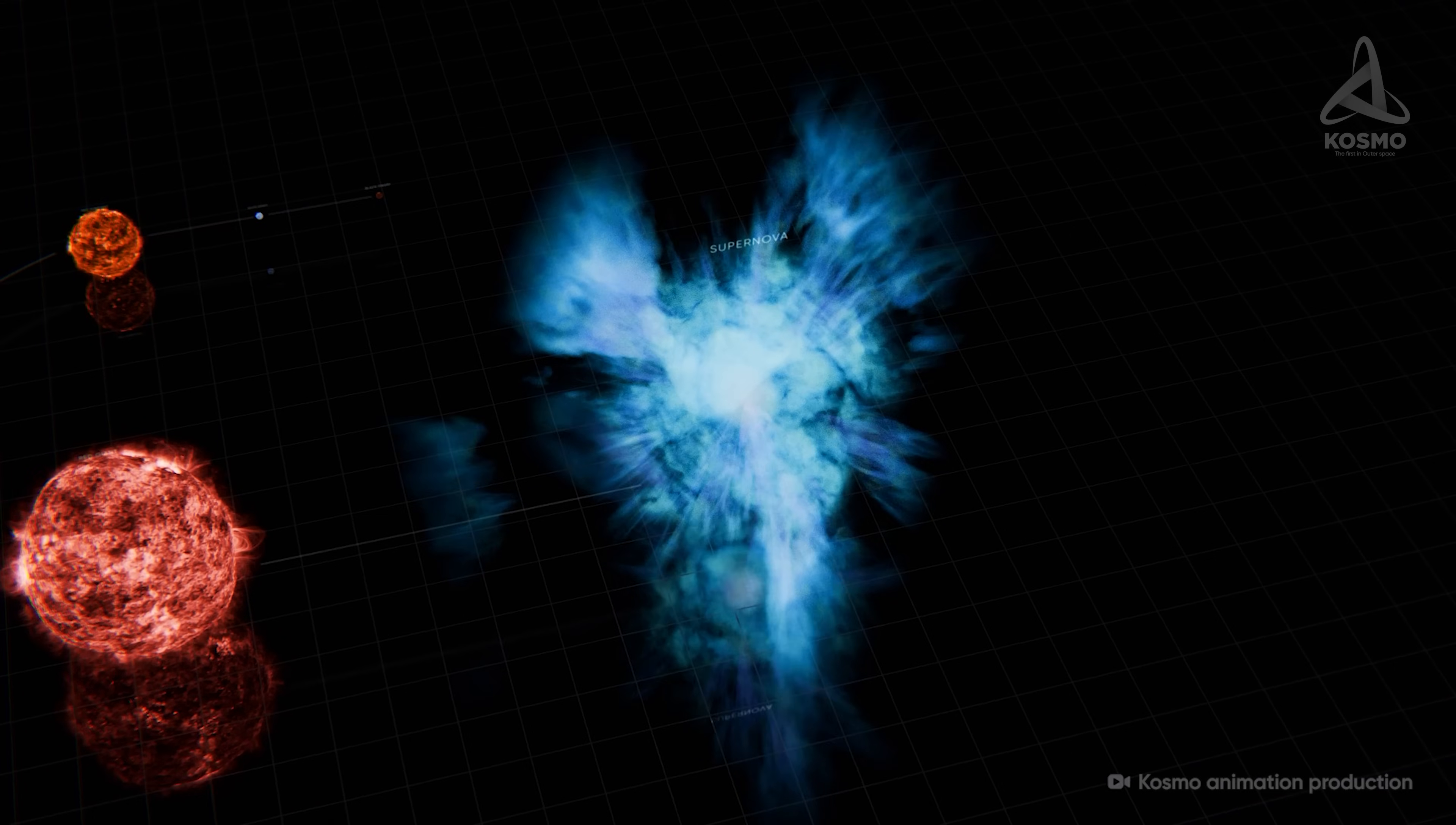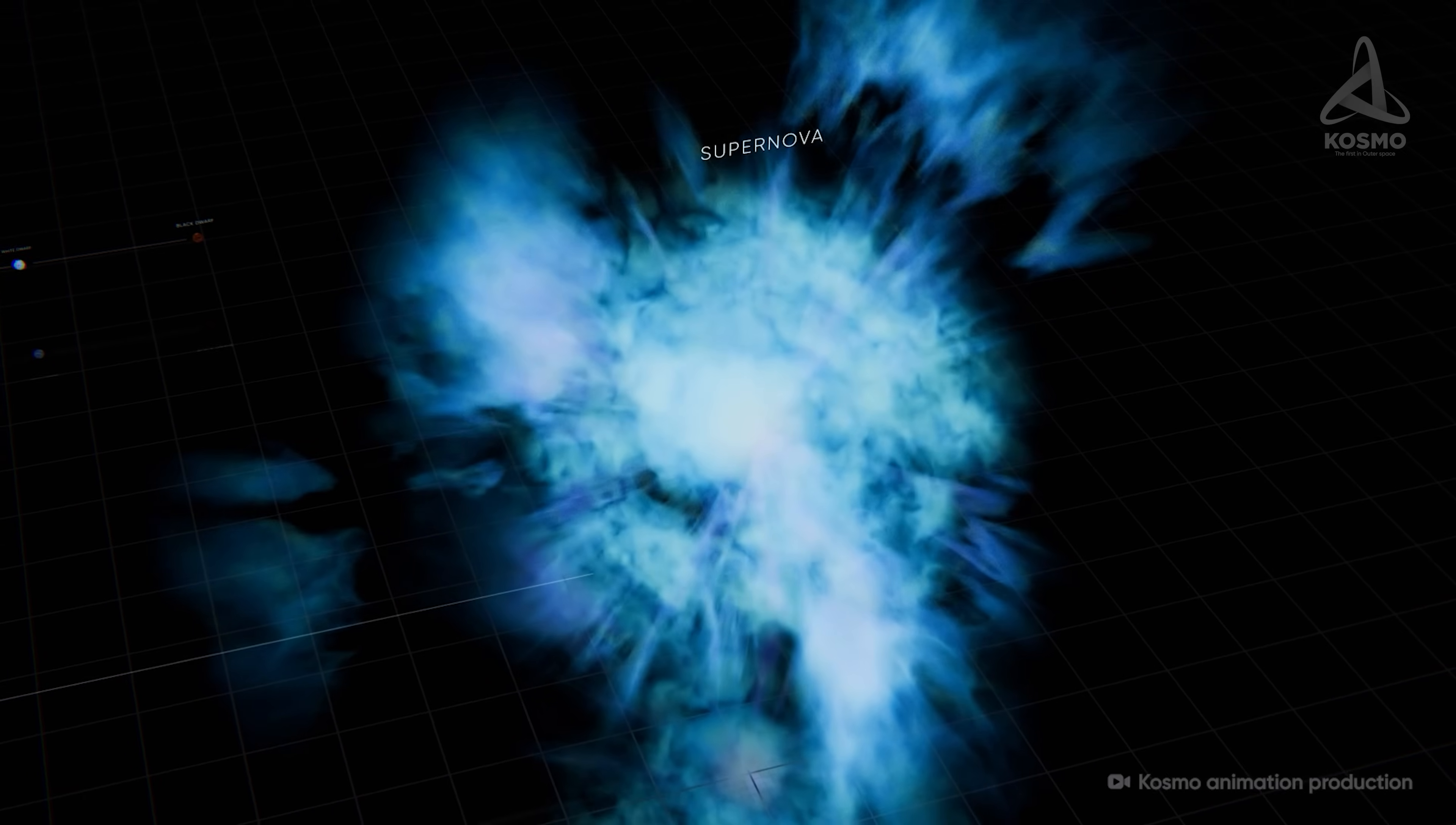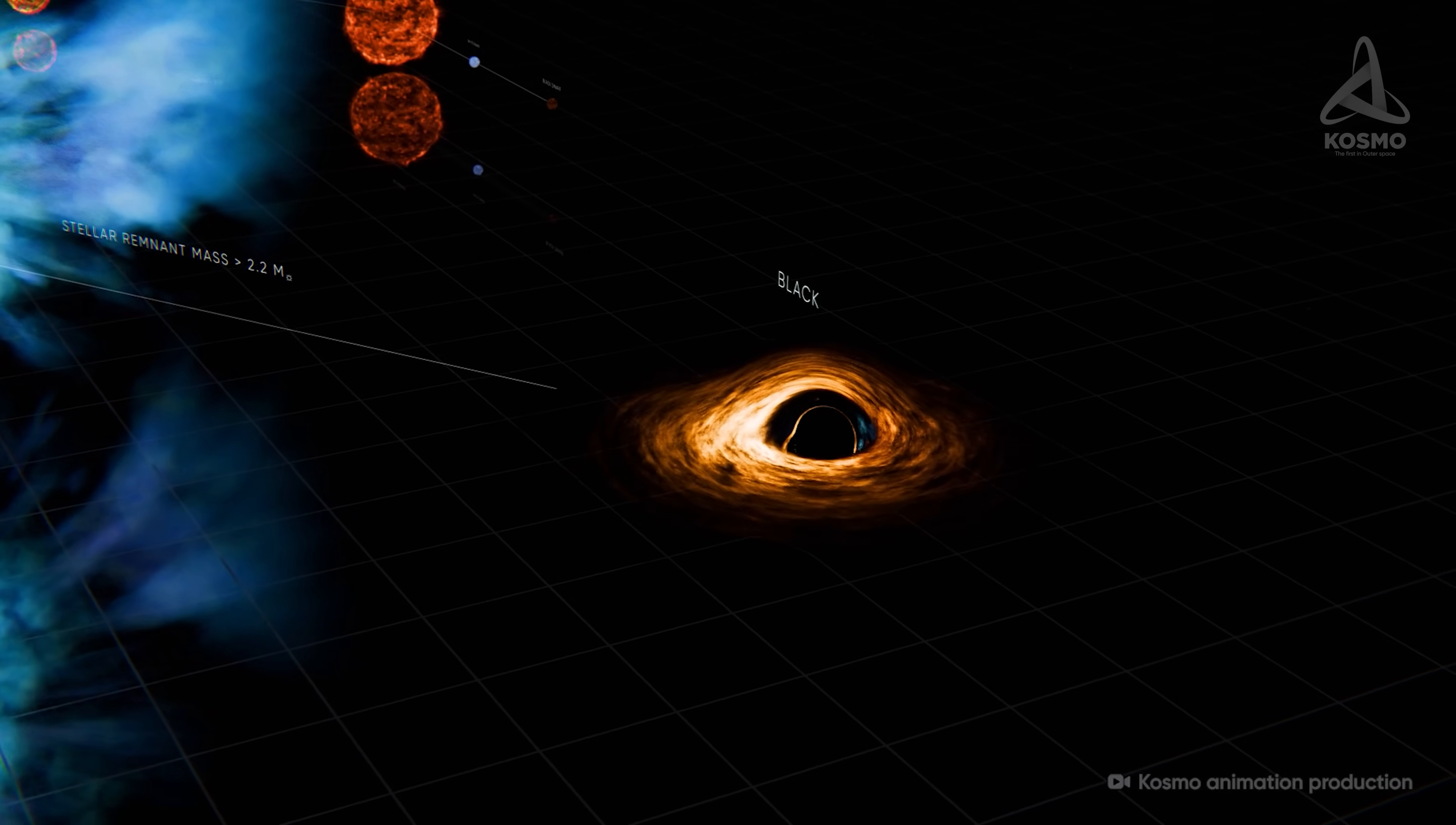The outer shells of the star are scattered in the surrounding space, forming a scattered gas nebula. At the center of the system, there remains a supercompact and extremely dense object, the former stellar core. Its fate also depends entirely on its mass. If it is too great, the core of the dead star will not be able to resist the inexorable gravity and will inevitably shrink into a black hole.